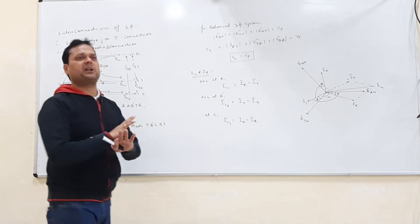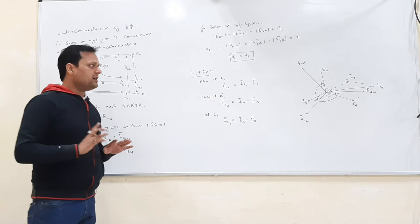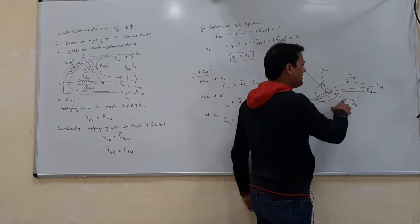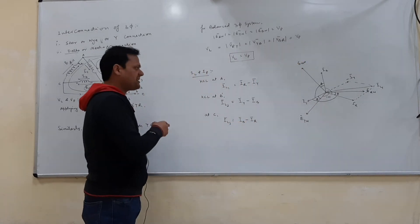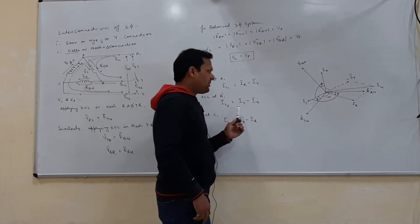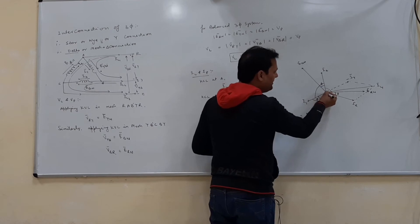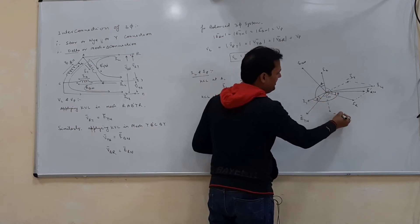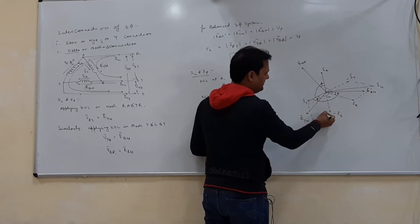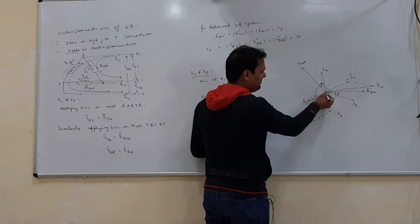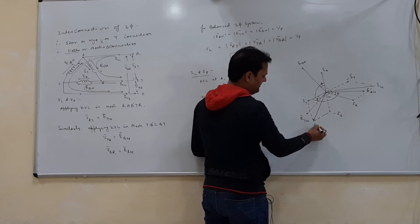These conditions are valid only for a balanced system. For an unbalanced system, you cannot make these simplifications. Once IL1 is obtained via the parallelogram method, we similarly draw the phasor for IL2, which equals IY minus IB: take minus IB and use the parallelogram addition with IY to get IL2.